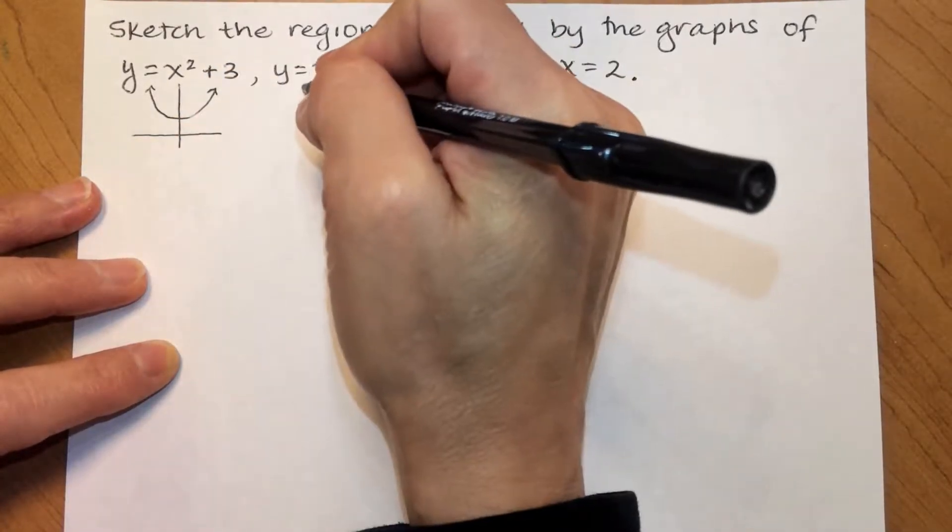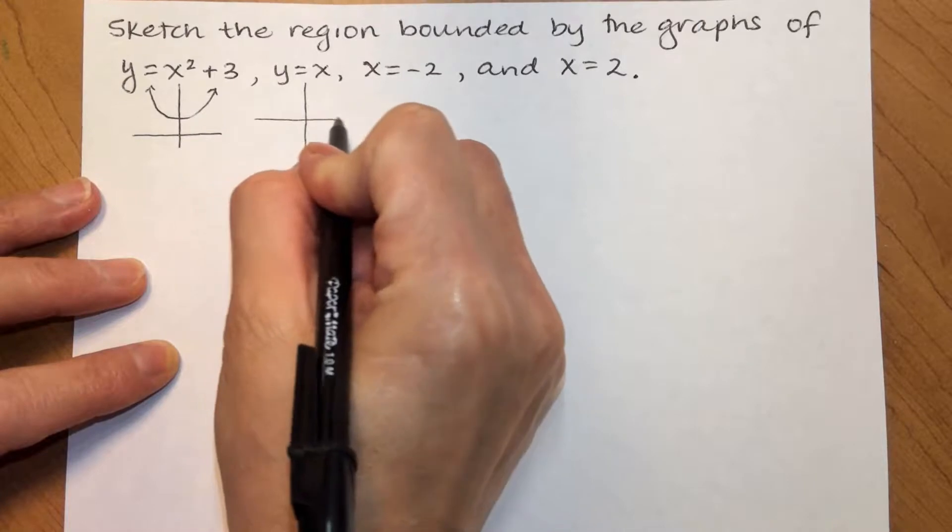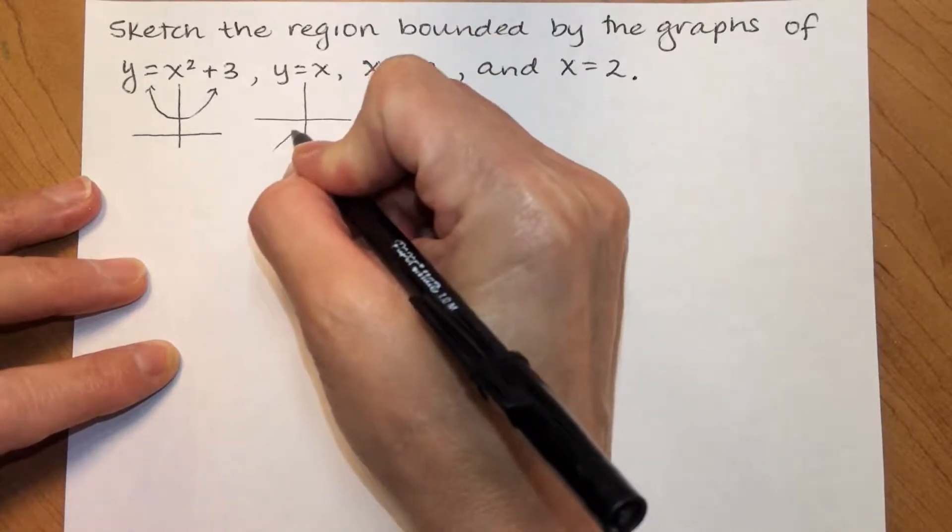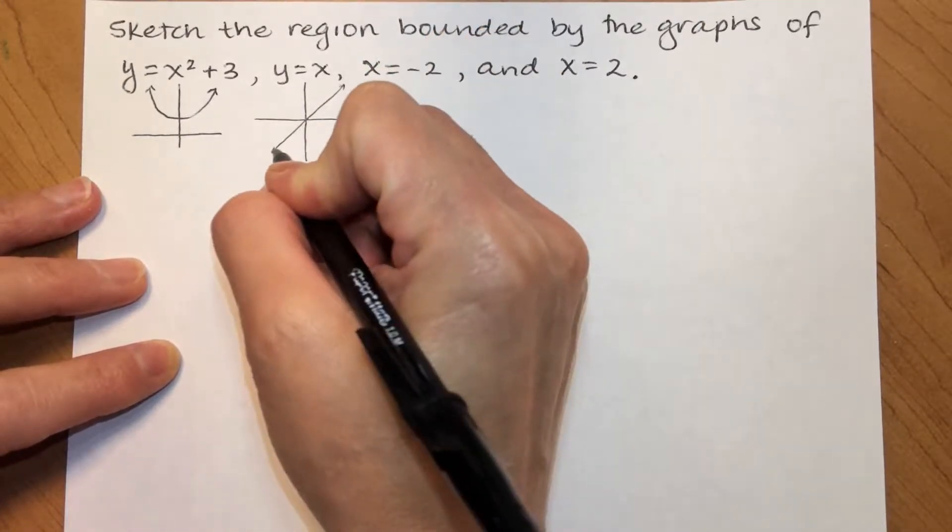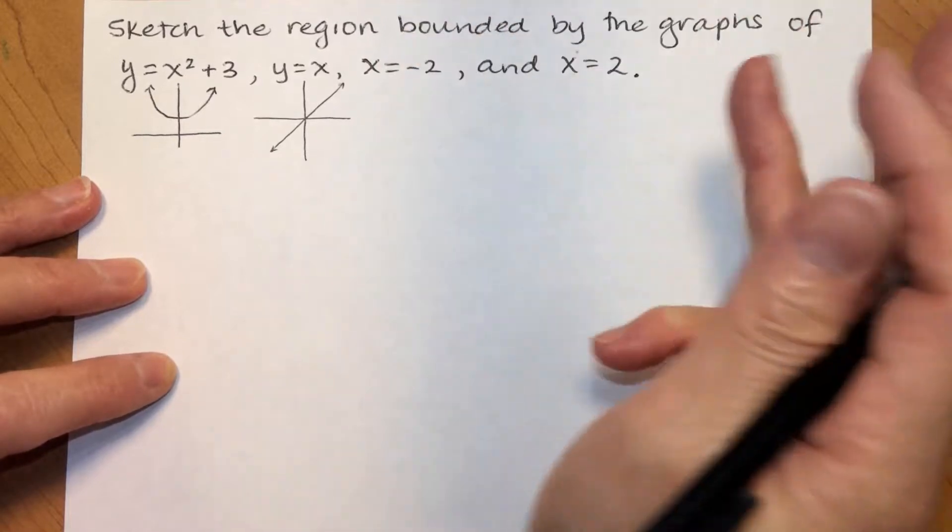And then, of course, the line y equals x is a line through the origin with a slope of 1. It doesn't look like those are ever going to intersect.